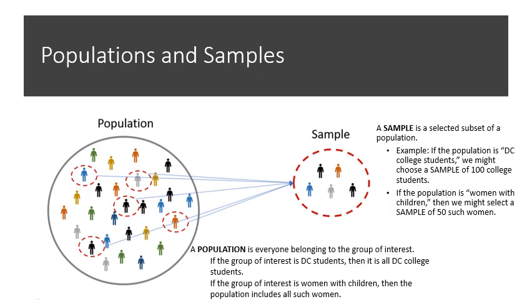So let's start with the population. A population is everyone belonging to the group of interest. So note this word, everyone belonging to the group of interest. So if the group of interest is Diné College students, then it is all Diné College students that we're interested in. Everyone, all. If we're interested in something about women with children, then the population, and this is a formal term, the population includes all women with children.